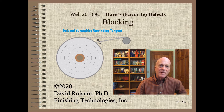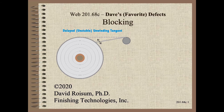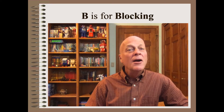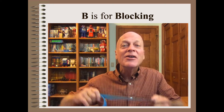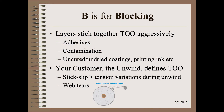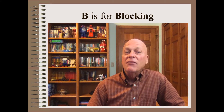As well as some film chemistries. I know your time is precious so let's get started. Blocking is when layers stick together too aggressively. Of course it is your customer at the unwind that defines how much is too much. If your customer looks closely they will see an unwinding tangent that is delayed, meaning it departs later than the tangent between the unwinding roll and the first roller.